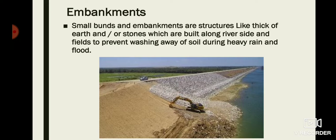Another process is making embankments. Embankments or bunds are structures like thick walls made of earth, stone, or concrete, which are built along the riverside and fields. Such embankments are built to prevent the soil from washing away during heavy rain or flood.